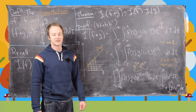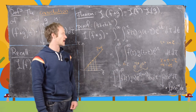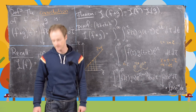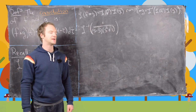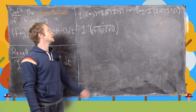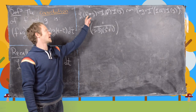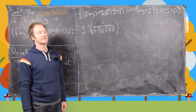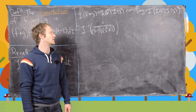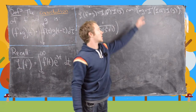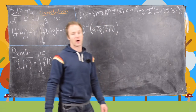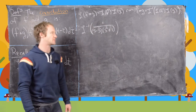Now that the proof is done, let's look at using this result to calculate an inverse Laplace transform. Recalling that the Laplace transform of f star g equals the Laplace transform of f times the Laplace transform of g, it follows that f star g equals the inverse Laplace transform of that product of the two Laplace transforms.